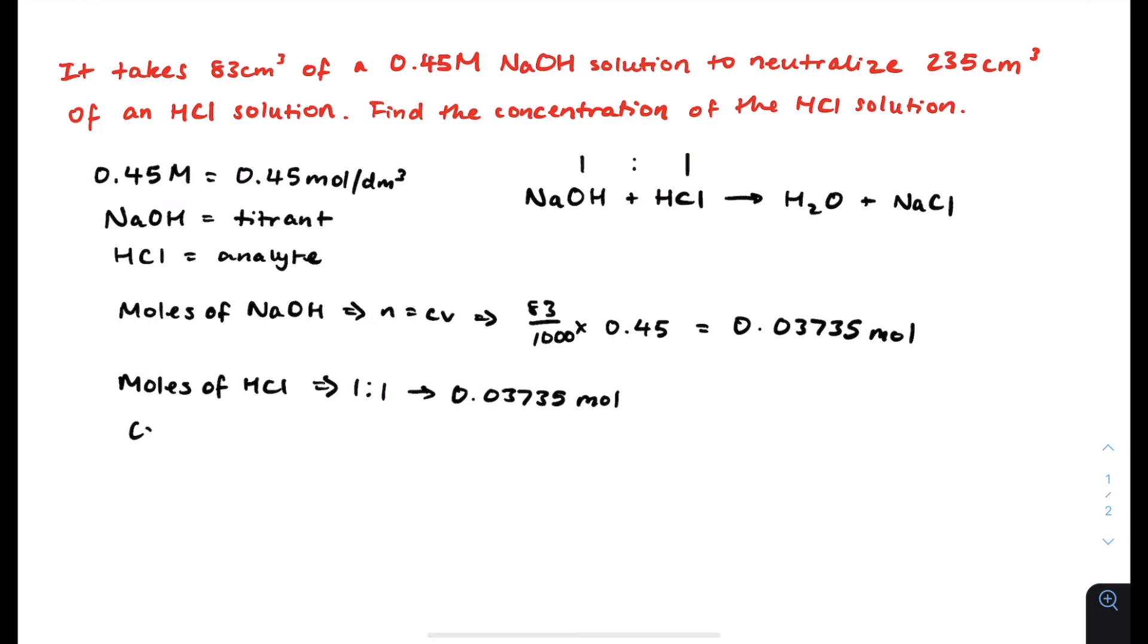And now we can find the concentration of HCl, which is C equals N over V. That's just rearranging the same equation we used in this step over here. So C equals N over V. And if we do that, we get C is equal to 0.03735 moles divided by the volume. The volume is 235, which is the volume of the HCl solution used, divided by 1,000 to make it into dm cubed. So that gives us 0.235.